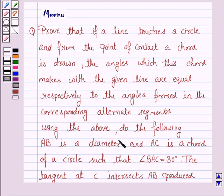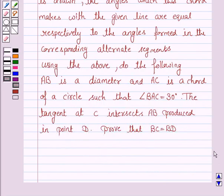Using the above, do the following. AB is a diameter and AC is a chord of the circle, so that angle BAC is 30 degrees. The tangent at C intersects AB, produced at a point D. Prove that BC is equal to BD.